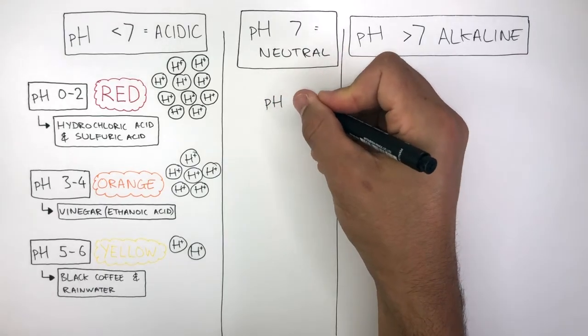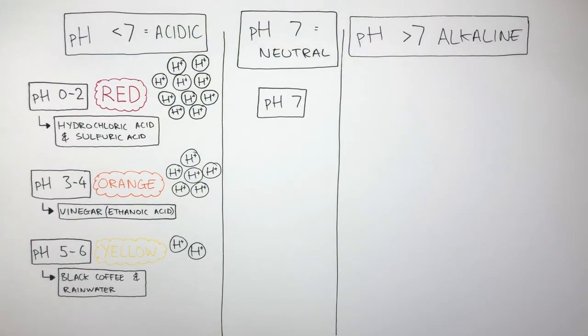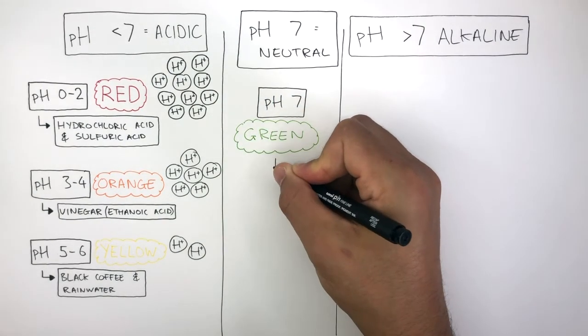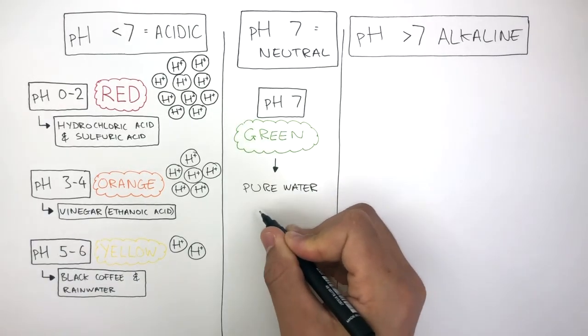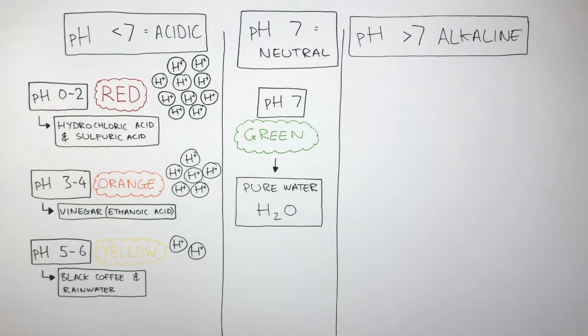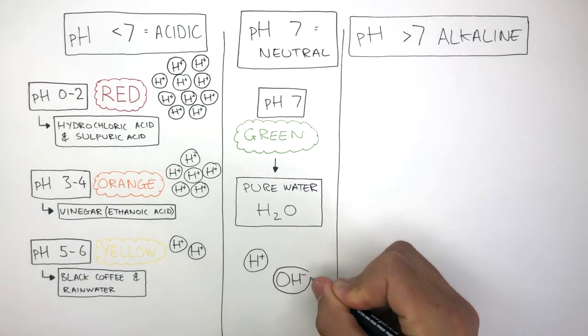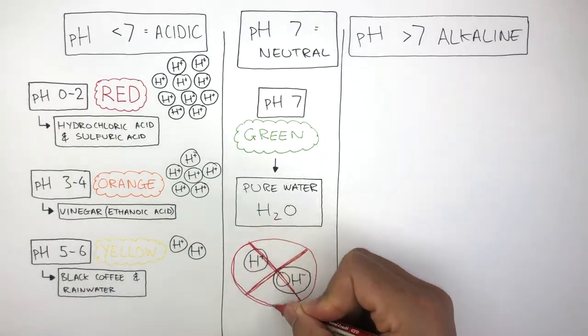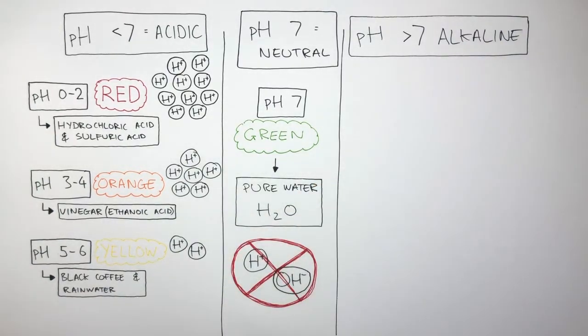A pH of 7 will cause Universal Indicator solution to be green. Pure water which has a molecular formula of H2O will cause Universal Indicator to be green. A neutral solution will have no hydrogen ions or hydroxide ions in excess. They will have all reacted to form water.